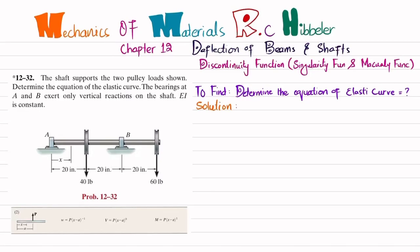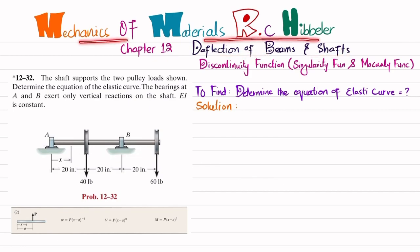Welcome back. In this problem, we are going to solve problem 12-32, taken from chapter number 12 on deflection of beams and shafts. The book is Mechanics of Materials by R.C. Hibbeler. The statement is: the shaft supports two pulleys with loads shown — determine the equation of elastic curve.